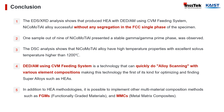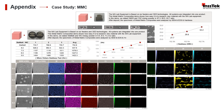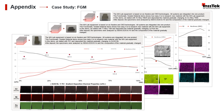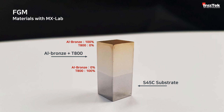In addition to the HEA methodologies, it is possible to implement other multi-material composition methods such as FGM functional graded materials and MMC metal matrix composites. Besides the creation of HEAs with the MX Lab and the CVM powder feeding system, it is also possible to explore multi-materials such as metal matrix composite alloys. Similarly, alloys with the structure of FGM or functionally graded materials can also be produced with the CVM and the MX Lab. Multiple applications can be found while exploring the infinite possibilities of material research within InSTEC.